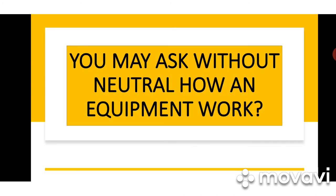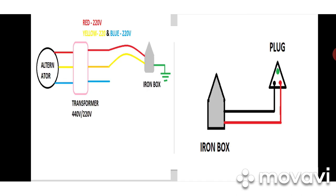Let's see how equipment works without neutral. On the right side there is an iron box getting one phase (red) and one neutral (black). On the left side — the ship side — the alternator produces 440 volts and we use one transformer to step down 440 to 220 volts. From the transformer, 440 volts comes in and is stepped down to 220 volts, and we use two phases — R and Y (red and yellow) — for the equipment, whereas at home we use red and neutral.